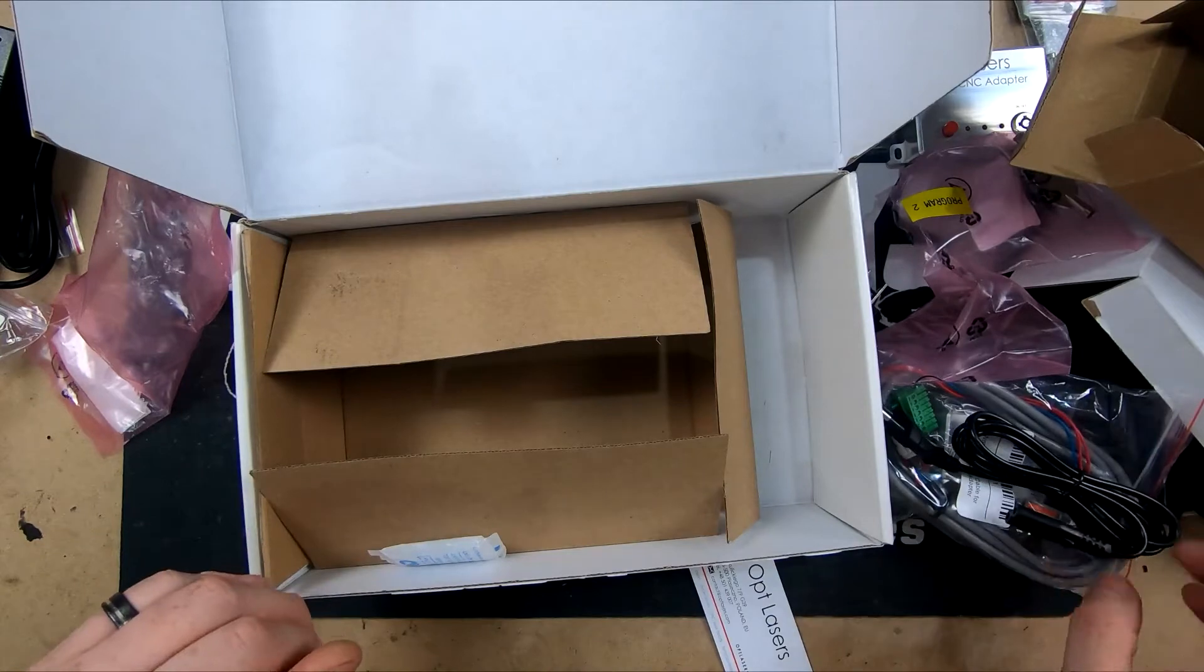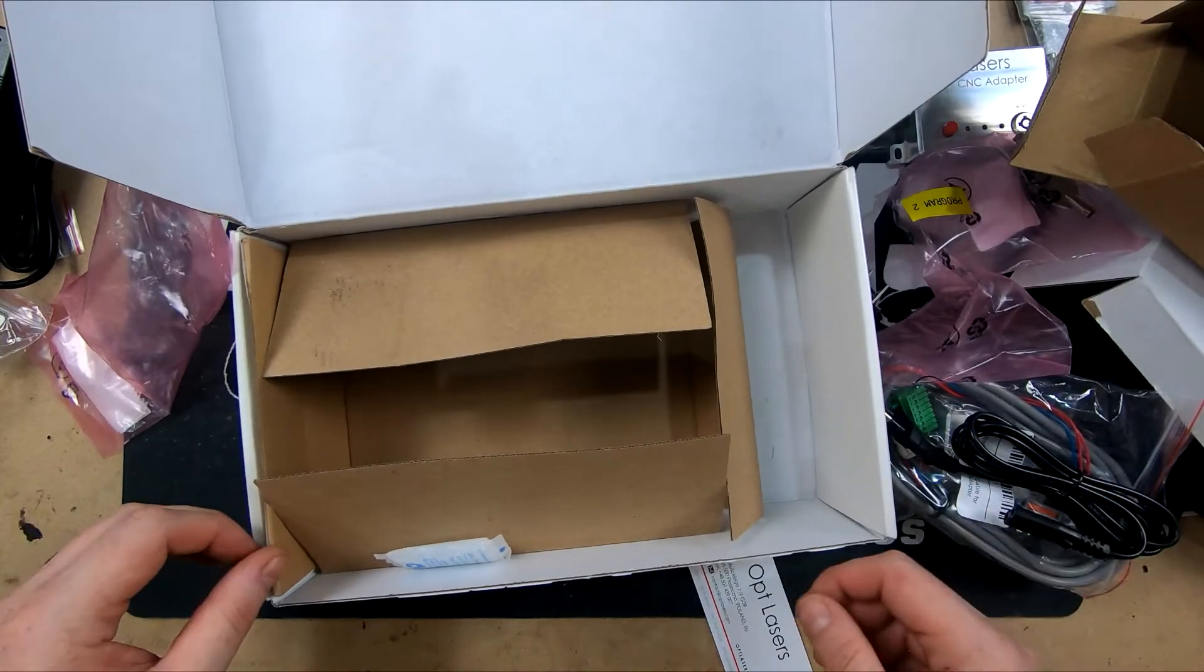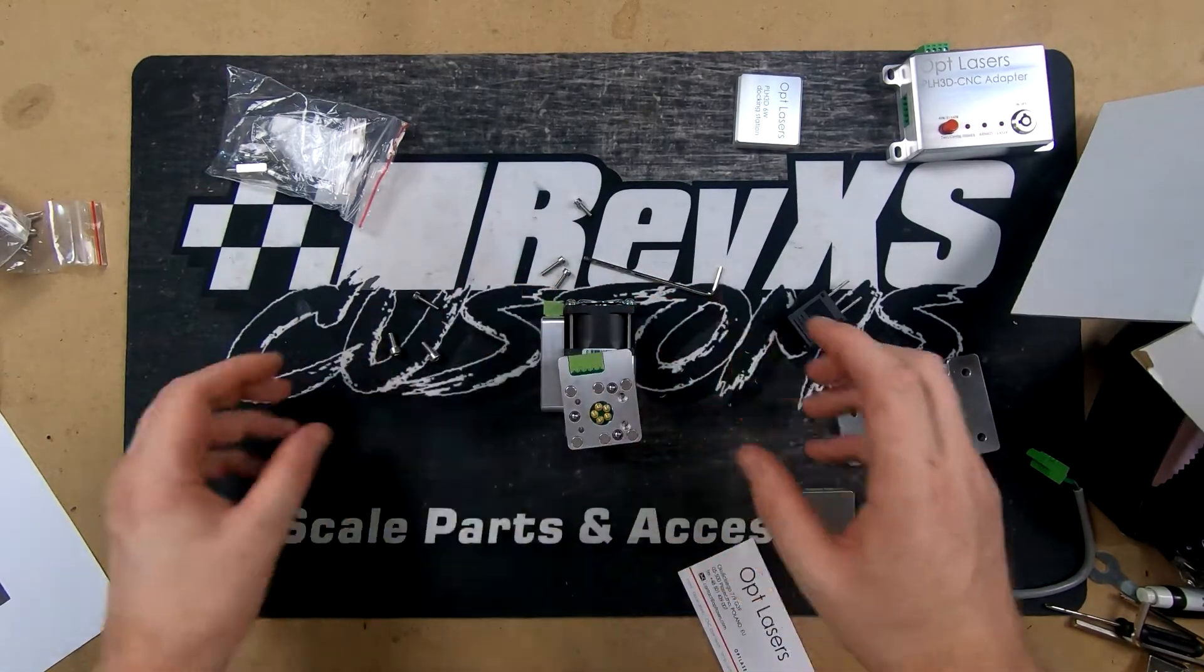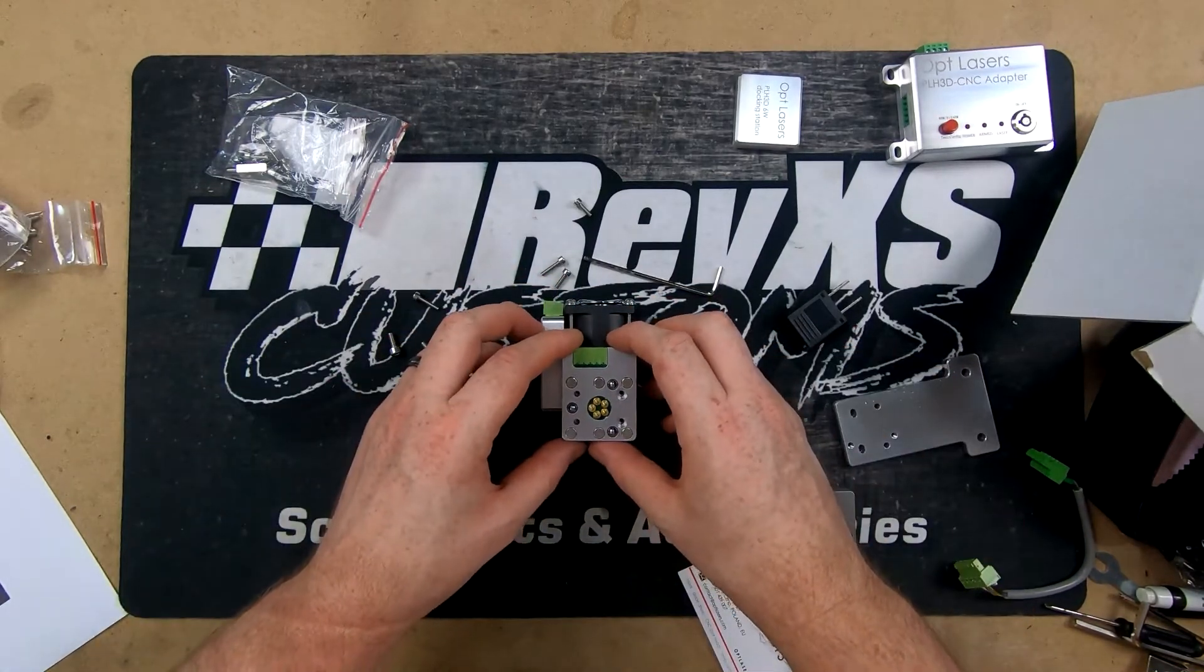So let's get this on the machine. We're going to start off by mounting the docking station, the magnetic docking station, which it appears it's only got one way it's going to go.